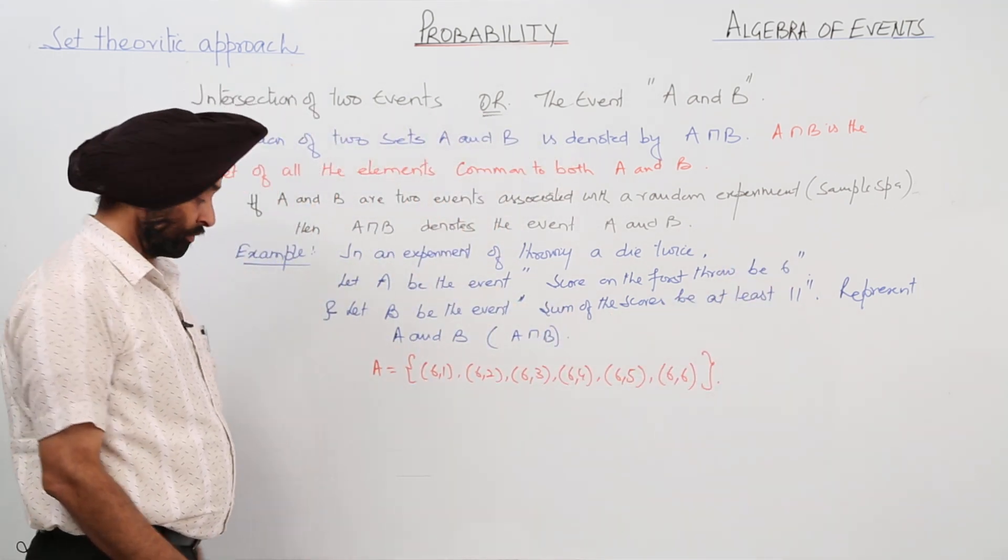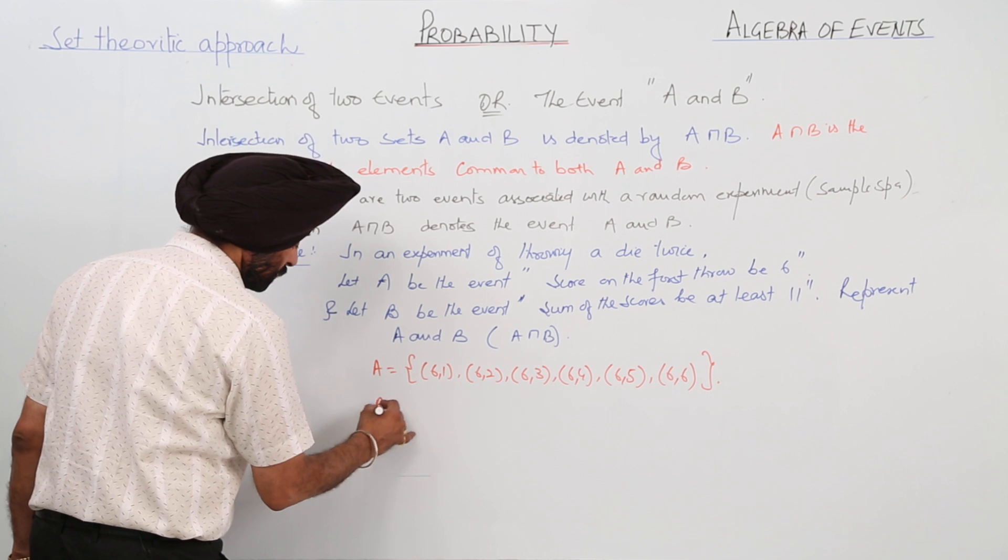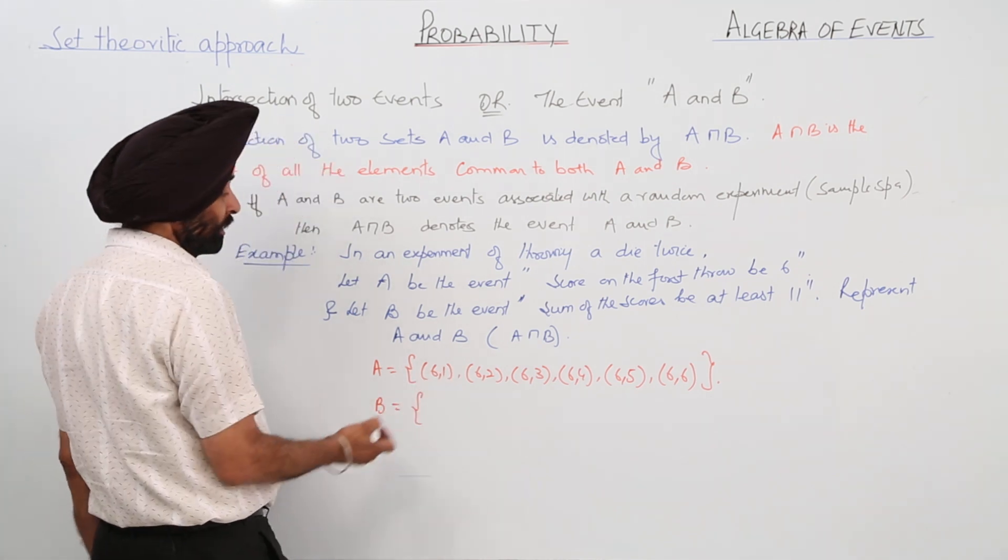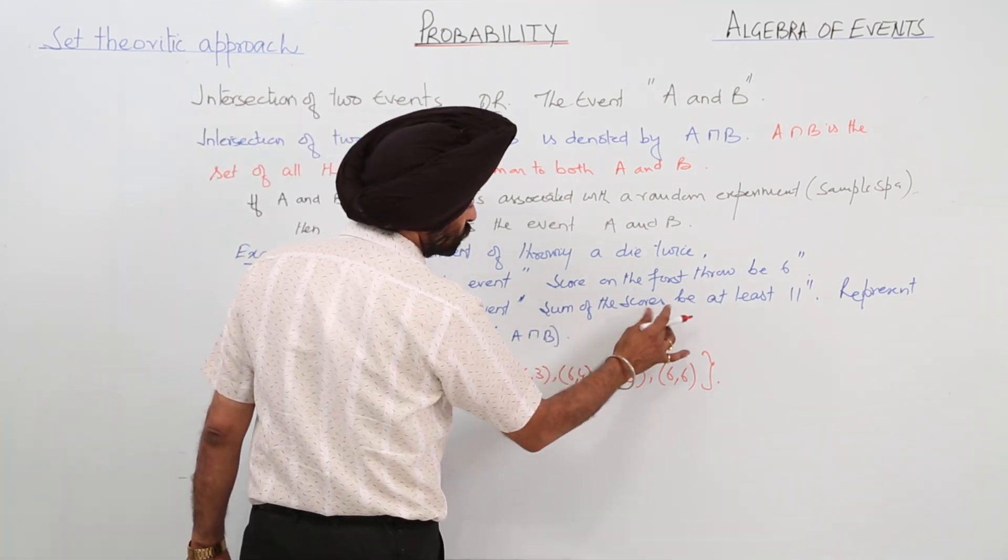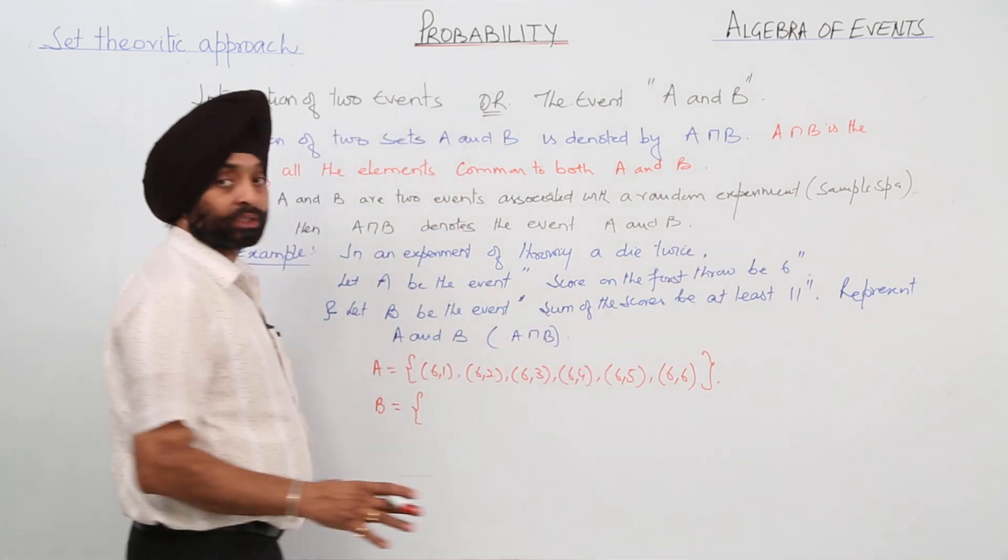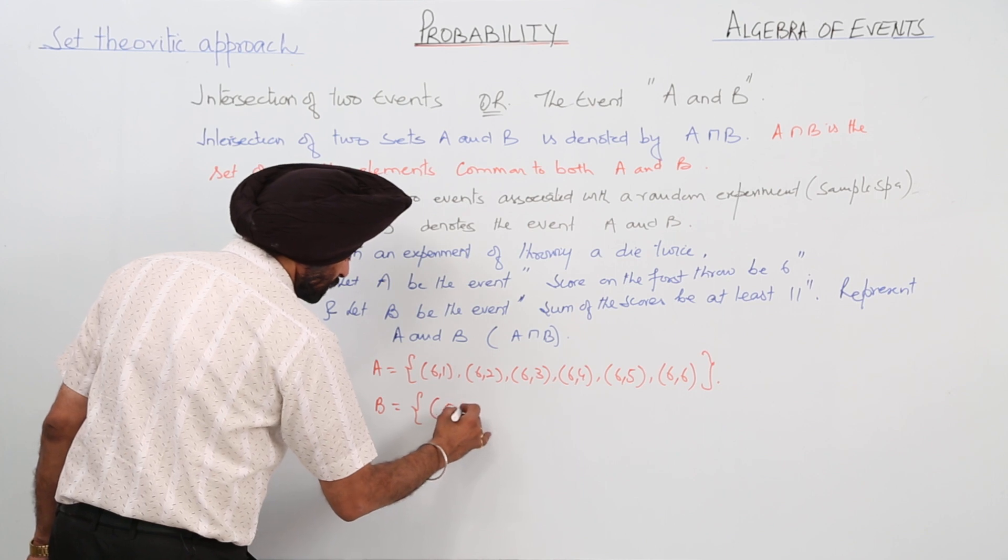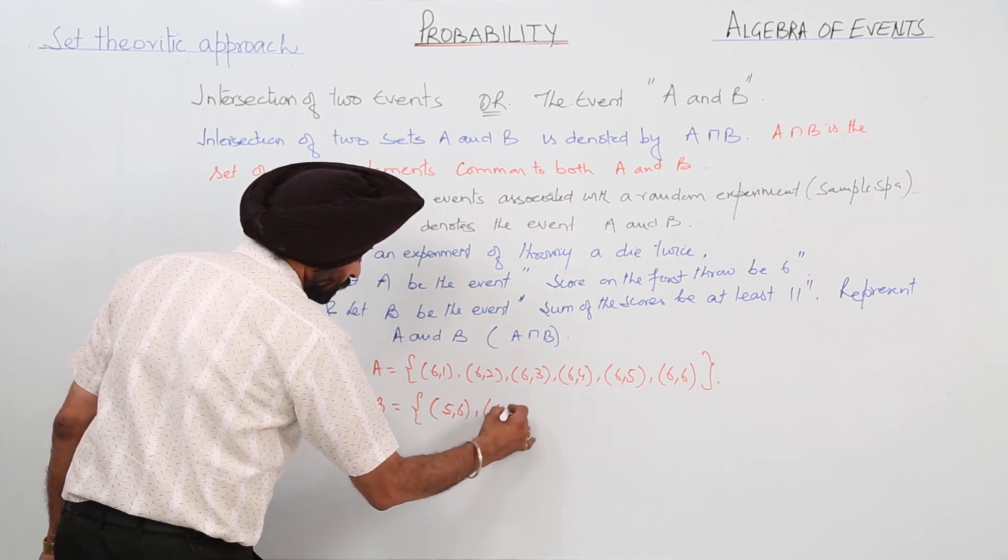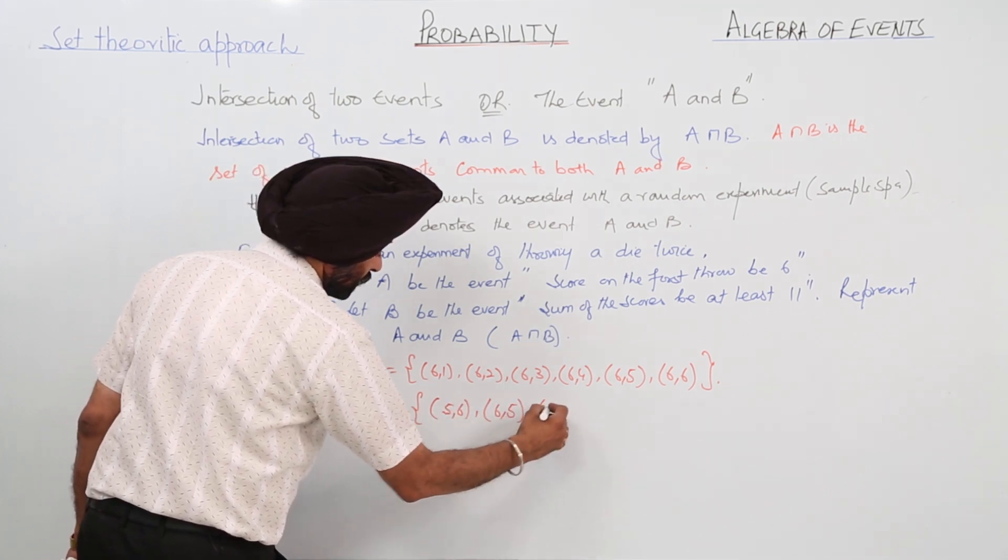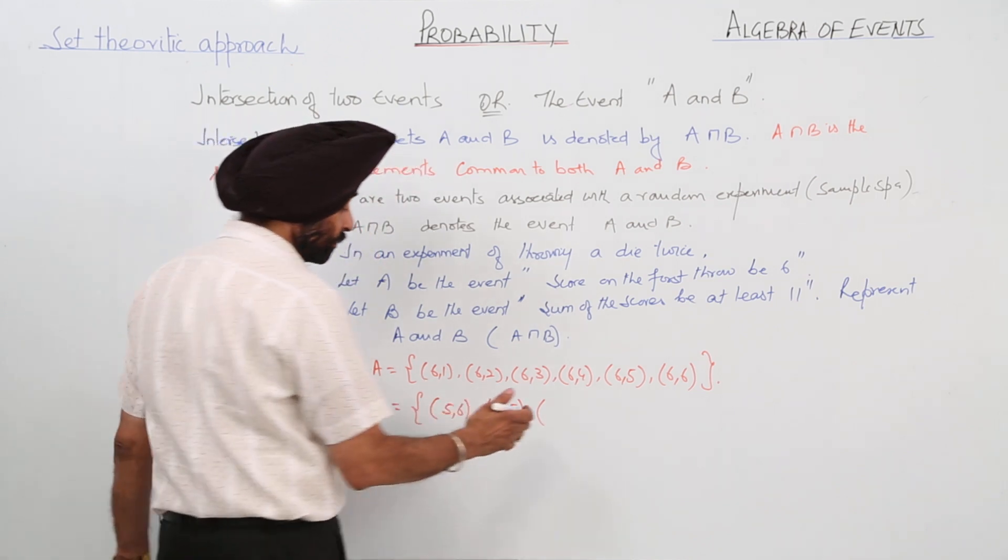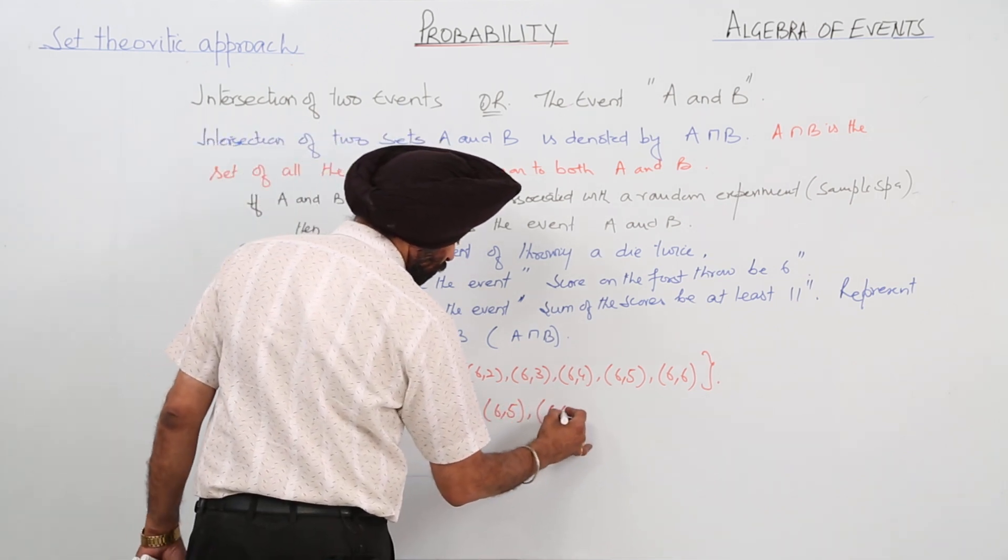Set B is written sum of the scores be at least 11. So it will be 5,6 is 11, 6,5 is 11, and it can be more than 11 also, so we are having 6,6.